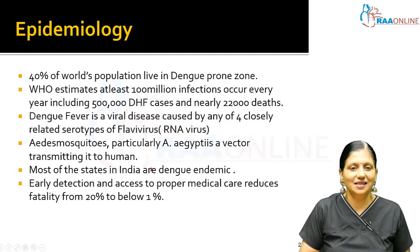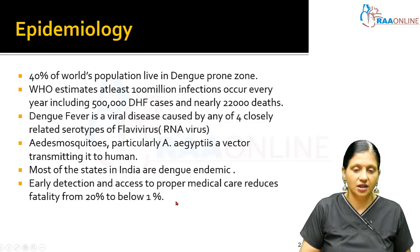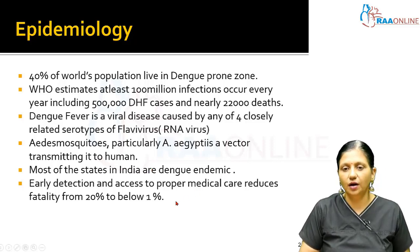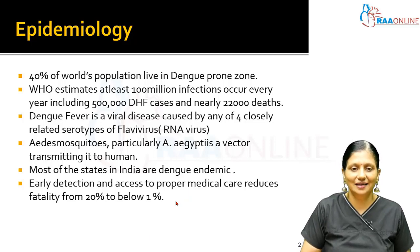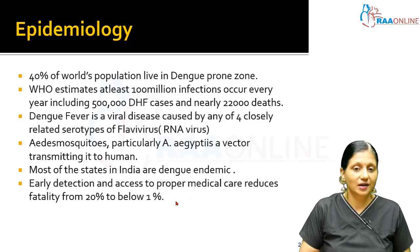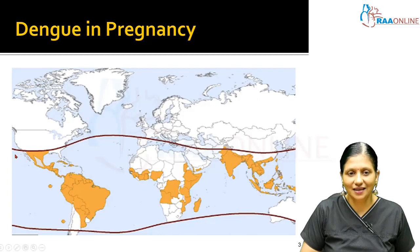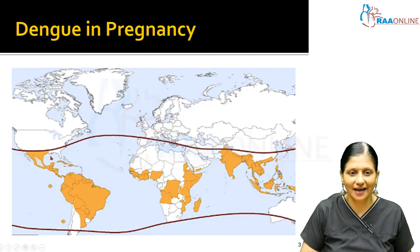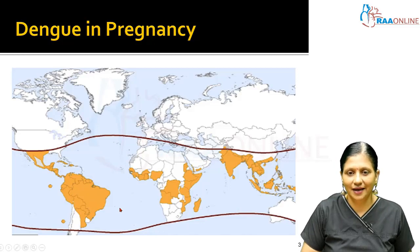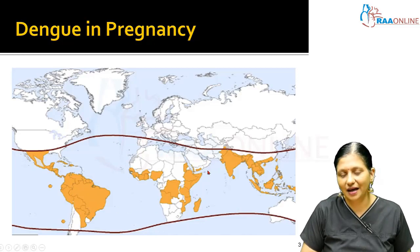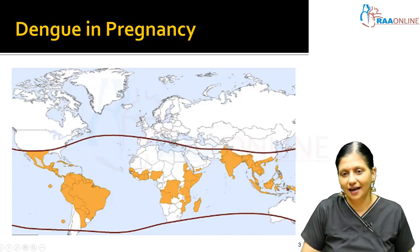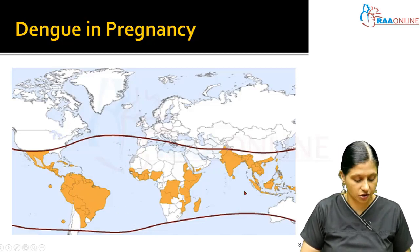Most states in India are Dengue endemic, and early detection and access to proper medical care will reduce fatality from 20% to below 1%. It is basically a disease of the southern hemisphere, with endemic regions in Latin America, parts of Africa, India, and Southeast Asia.